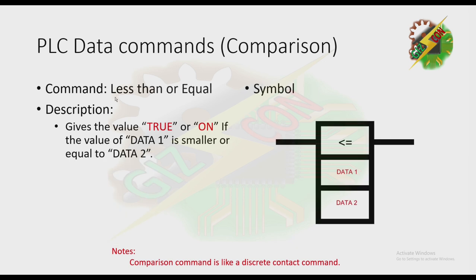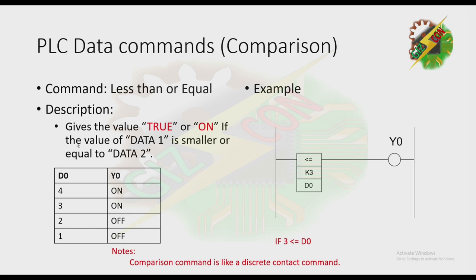Next is Less Than or Equal — it gives the value true or ON if the value of Data 1 is smaller than or equal to Data 2. This is the symbol for this command. The command means: 3 is less than or equal to D0. From the table: if D0 is 4, Y0 is on; if D0 is 3, Y0 is on; if D0 is 2, Y0 is off; and if D0 is 1, Y0 is off.